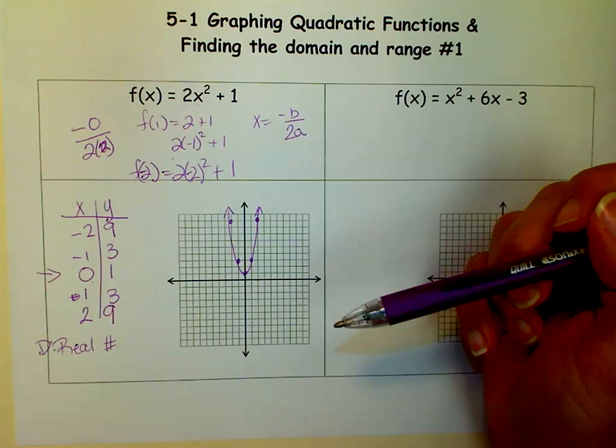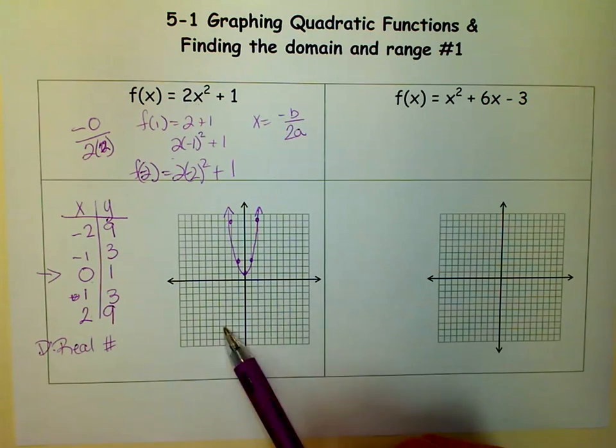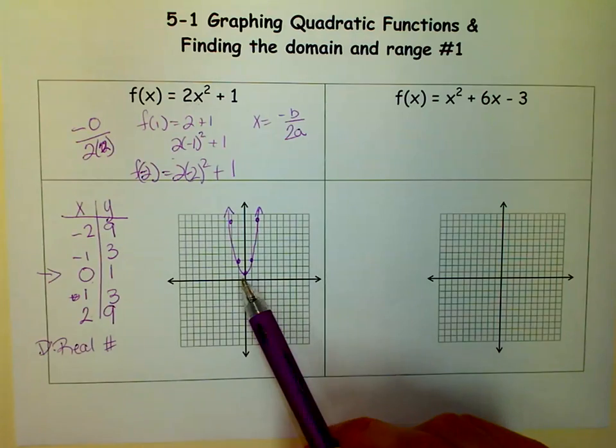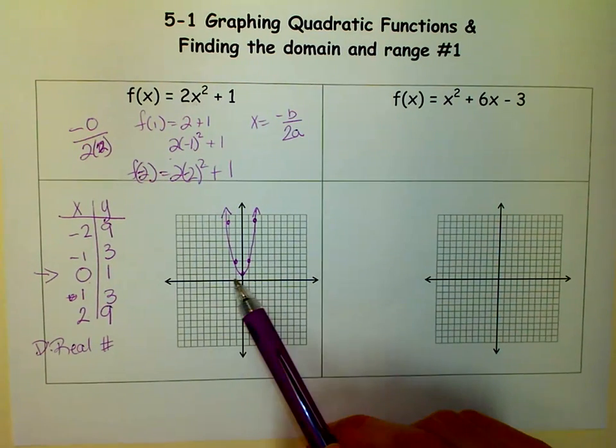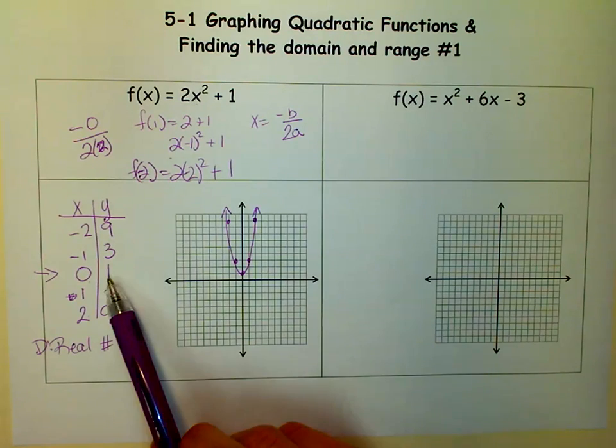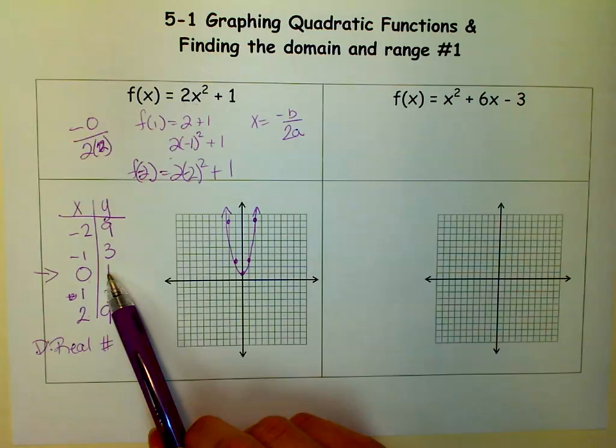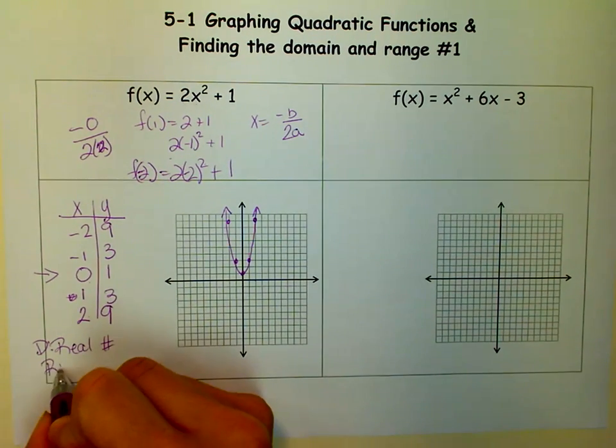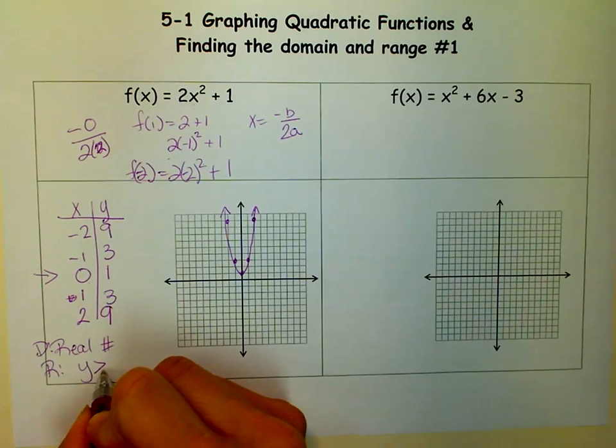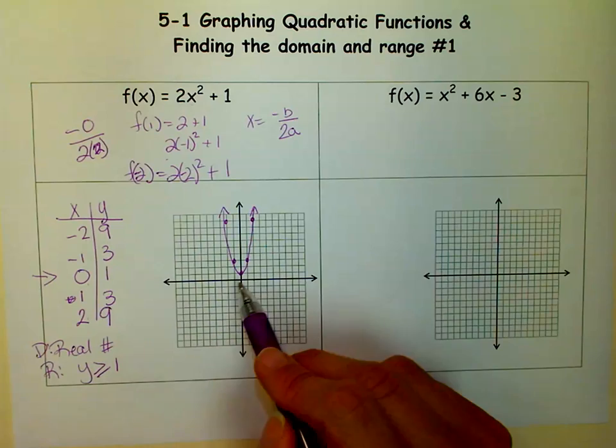So my domain is all real numbers. The range stands for what the values of y are. And you'll notice that this is the lowest point on my graph. There's no y's down here. The left and right, this parabola goes left and right forever, but it only starts here and goes up forever. So we've got to find that point, which is our minimum. And the range is always, you go to the vertex and you use that y. So since I'm going up, I would say my range is y is greater than or equal to 1 because the vertex has a y of 1.